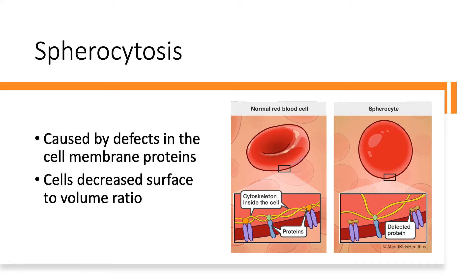In some cases, these proteins might be defective, and this results in a phenomenon called spherocytosis. The cells, or spherocytes, are totally spherical, and they are characterized as having a decreased surface-to-volume ratio.